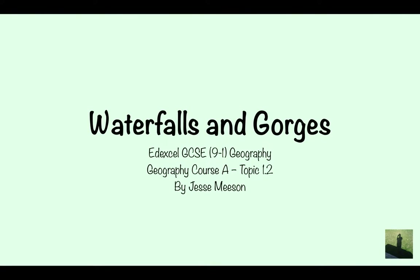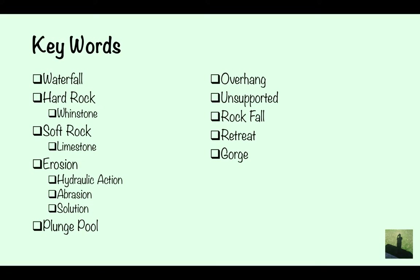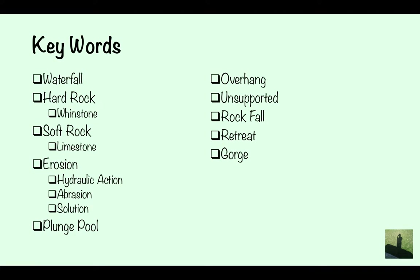Waterfalls and Gorges as part of the Edexcel GCSE 9-1 Geography course. The key words you're going to need are: waterfall, hard rock (for the named example, whinstone), soft rock (for the named example, limestone), erosion — specifically hydraulic action, abrasion, and solution — plunge pool, overhang, unsupported, rockfall, retreat, and gorge. When you get to the end of the video, you can come back to the keywords page and use it as a kickstart to write your own answer.